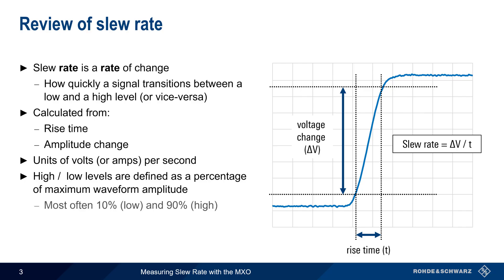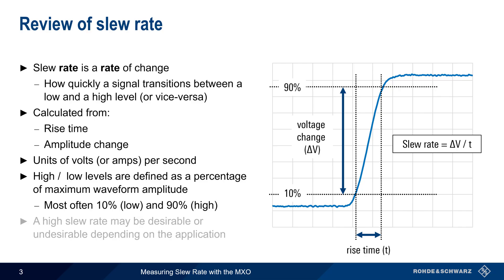Most often, the low level is 10% and the high level is 90%, although in some cases 20% and 80% are used. A high slew rate is desirable in some applications, such as in power electronics, but may be undesirable in other applications.